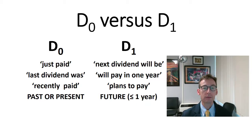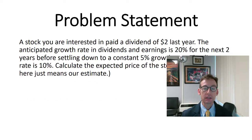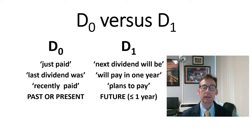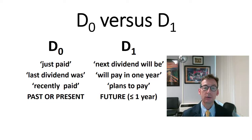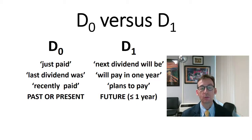Be careful because sometimes they'll say things like: 'The company expects to start paying its dividend in year three.' That means D0, D1, and D2 are all zero. And the last thing to keep in mind is that we never receive D0 unless we are told otherwise.